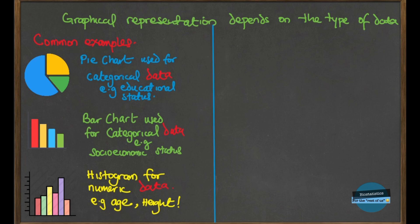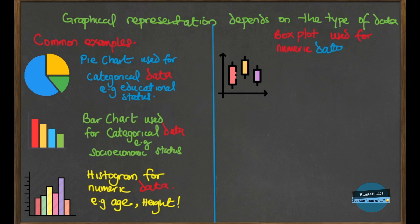The next one is the box plot. The box plot is also used for numeric data, but this depends on what type of variable you are dealing with and what type of relationship or hypothesis you are trying to prove. If you're looking at the distribution of a single variable, a box plot is used for numeric variables. If you are talking about two variables and want to see the relationship between them, one variable is numeric and the other variable is categorical.